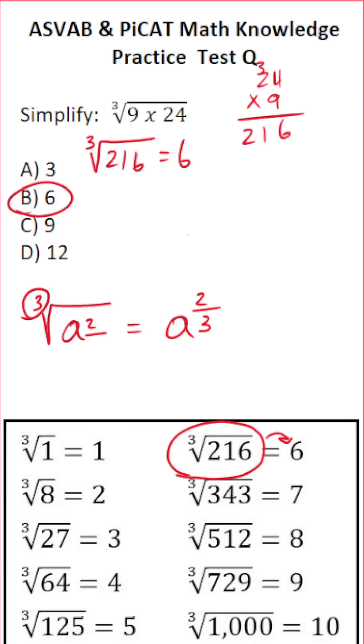Cube root means something multiplied by itself equals that number. 6 times 6 times 6. 6 times 6 is 36. 36 times 6 is 216. 6 times 6 times 6 is 6 to the 3rd.